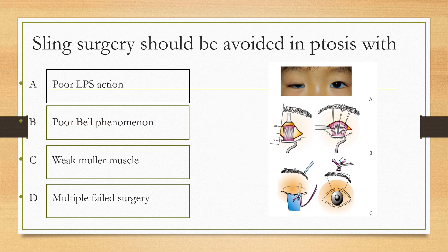Sling surgery should be avoided in ptosis because of: option A poor LPS action, option B poor Bell's phenomenon, option C weak Muller's muscle, option D multiple failed surgeries. The sling surgery should be avoided in patients with poor Bell's phenomenon because there is a risk of developing lagophthalmos post-surgery.